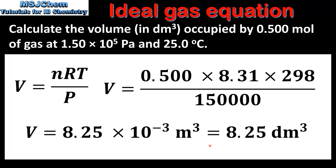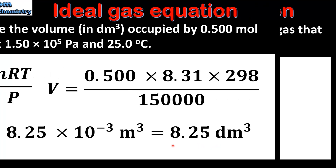To convert to cubic decimeters we multiply the volume in cubic meters by 1000, which gives us 8.25 cubic decimeters.